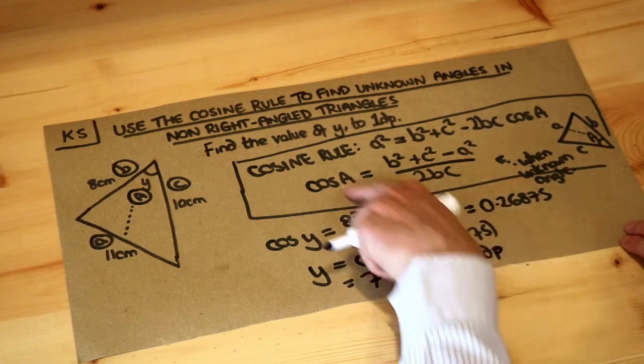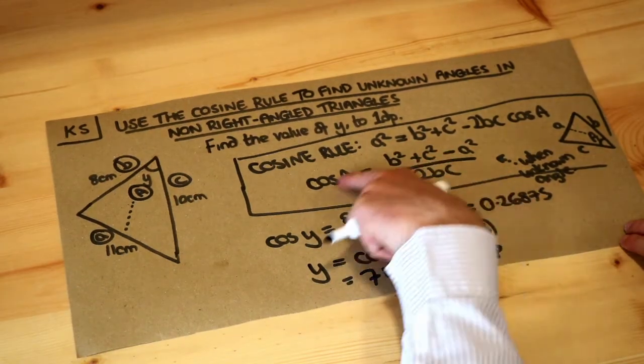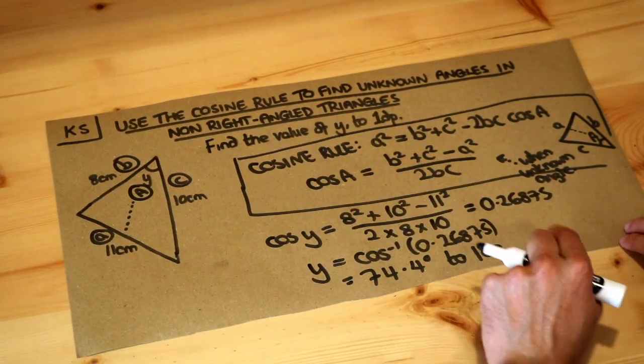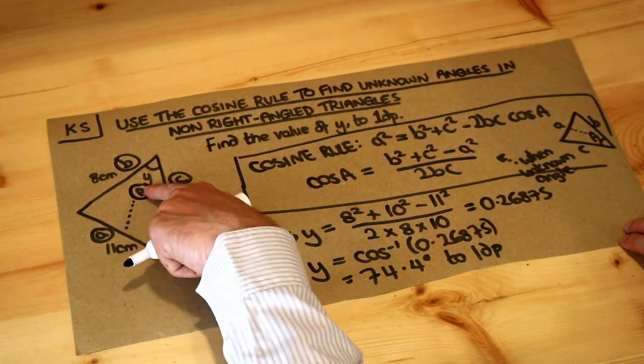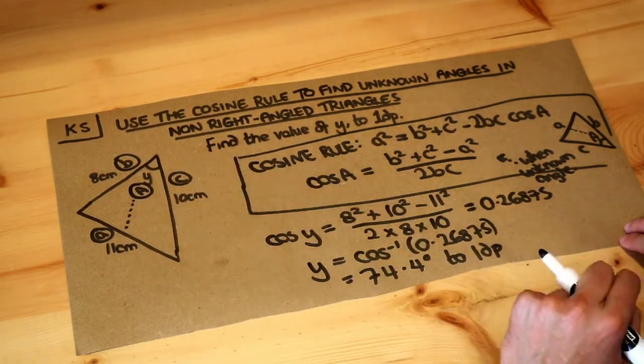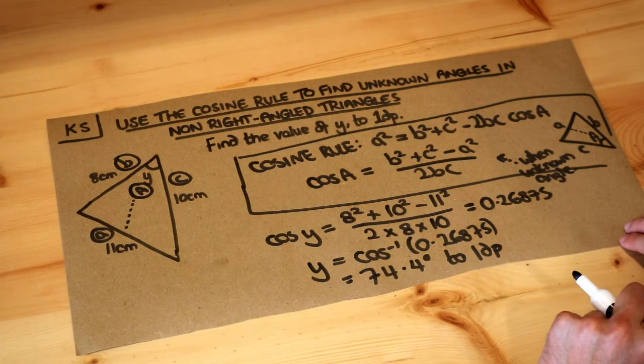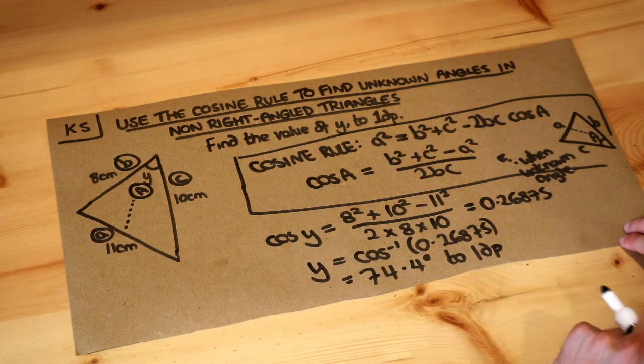So basically you've got this rearranged formula here, this rearranged form of the cosine rule, and just substitute your sides and that angle into that in order to work out the unknown angle. You will need to do inverse cos at the end to get rid of that cos in front of the Y.